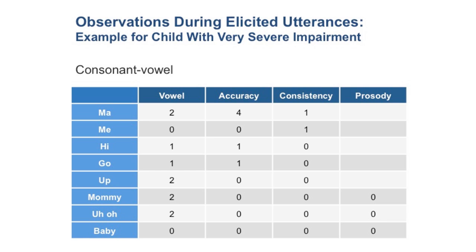He does get the vowel correct in 'up,' 'mommy,' and 'uh-oh,' and that's because we always score the vowel in the stressed syllable. Those stressed-syllable vowels are more likely to be produced correctly by him because they're kind of in his comfort zone.